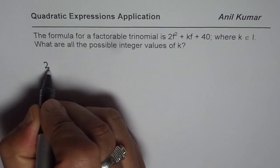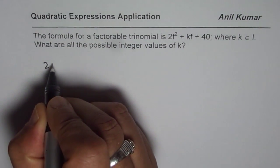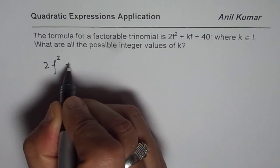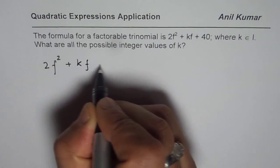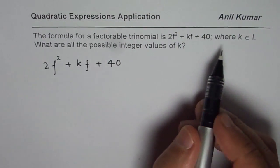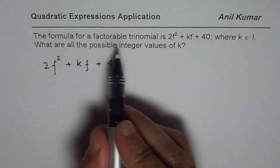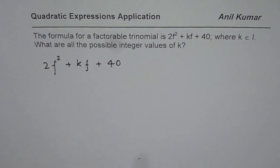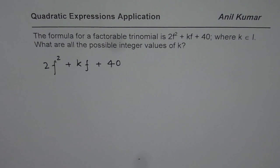So what we are given here is 2f² + kf + 40, and we want to convert this into a factorable trinomial. So what are the possible values of k? That is what you need to write. Take it as a practice test question — you can pause the video, answer the question, and then look into my suggestion.